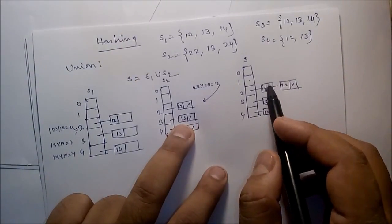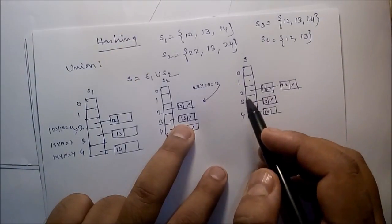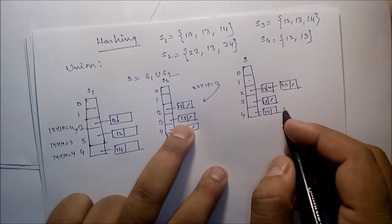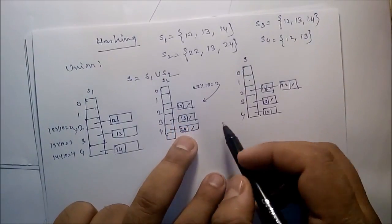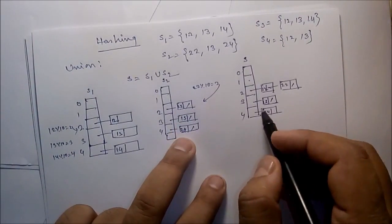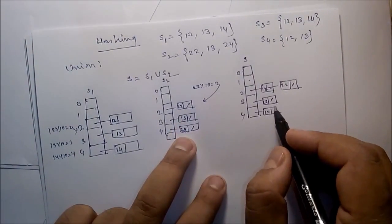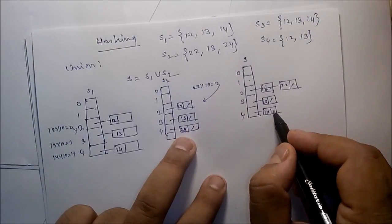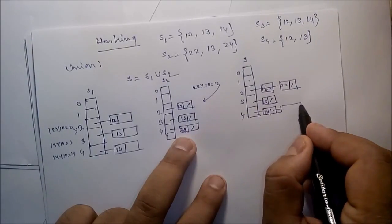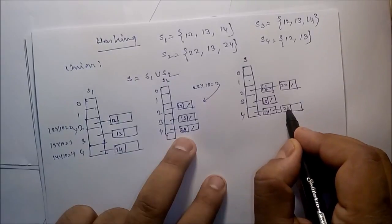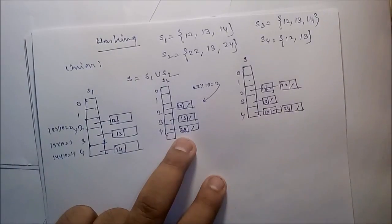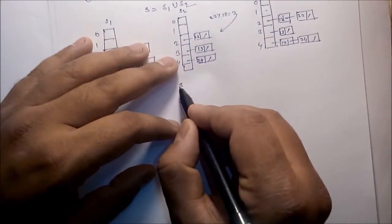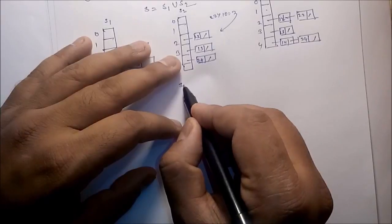After union, the sets would contain only distinct data. Now 24: 24 modulo 10 is 4. Compare with 14 at index 4 — it is not a match, so store 24 here. That completes the union operation.